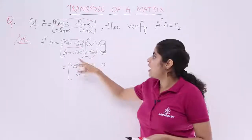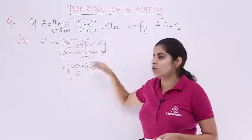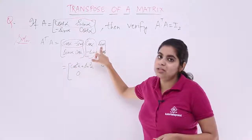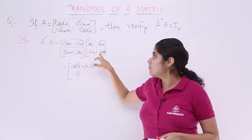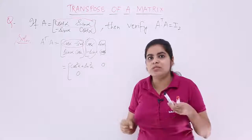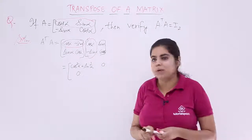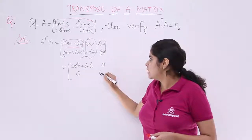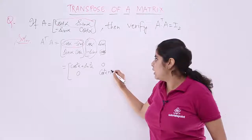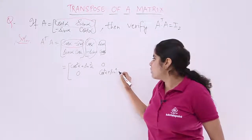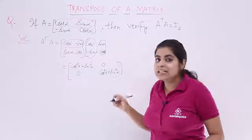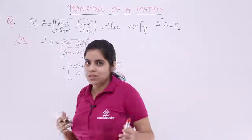Last but not the least I have again second row, second column. So sin alpha into sin alpha is sin square alpha. Cos alpha into cos alpha is cos square alpha. So sin square alpha plus cos square alpha is 1. So it is basically again cos square alpha plus sin square alpha which I will be writing in the later step as 1, 0, 0, 1.